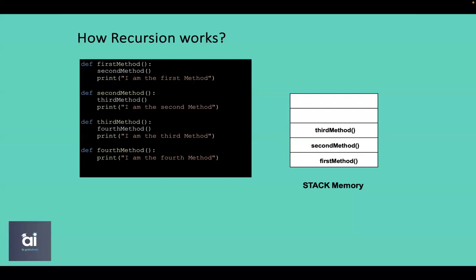The stack works based on LIFO strategy. The last method added to the stack is the third method, so this method will be called by the system as the next step to execute the rest of the code, which is printing 'I am the third method'. After this statement, we know the third method is done, so it will be popped out from the stack memory.